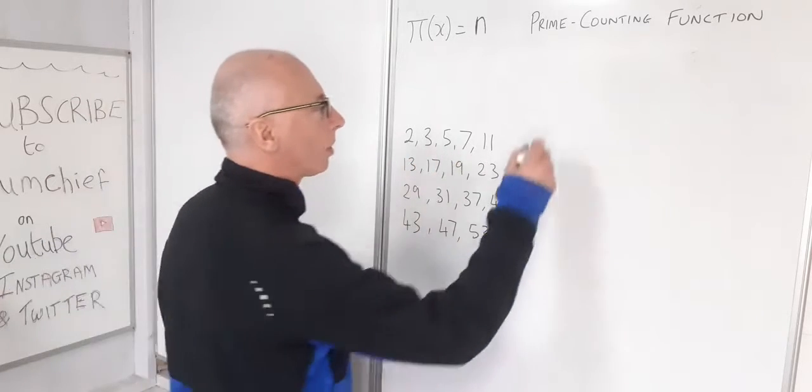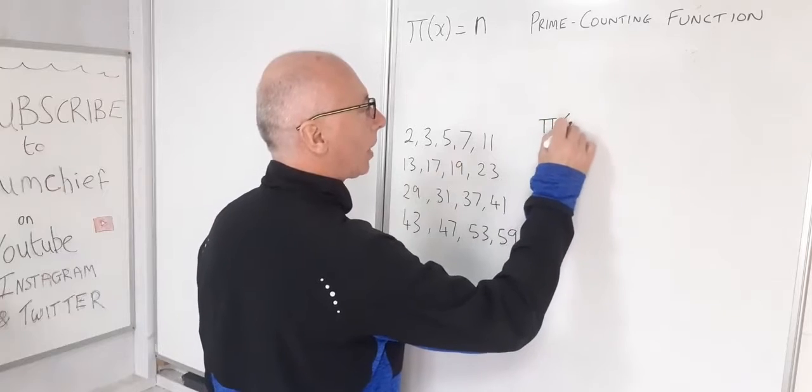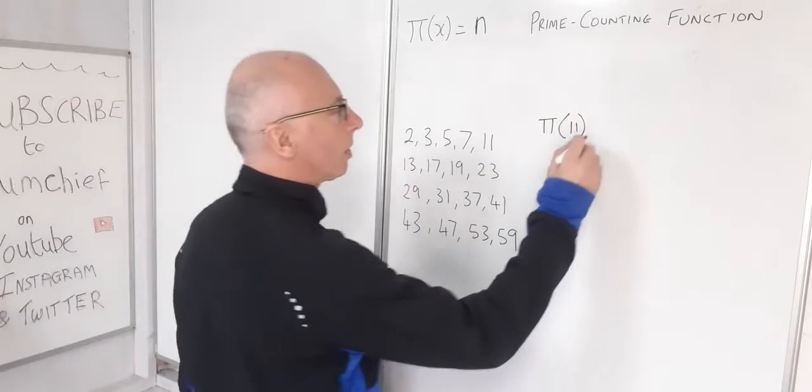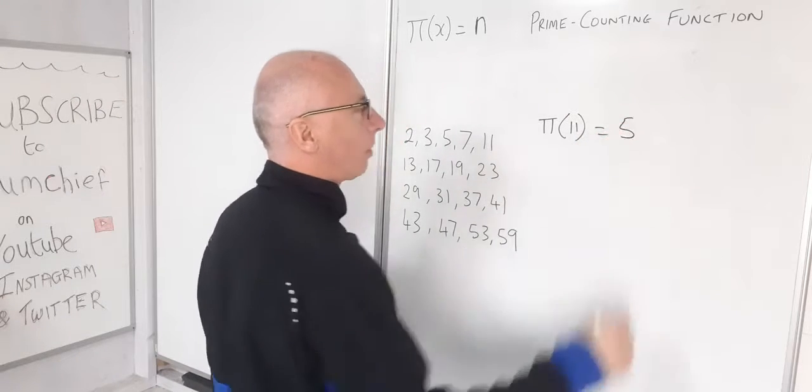If I would say to you π(11), well obviously there's five prime numbers up to 11, so that equals 5.